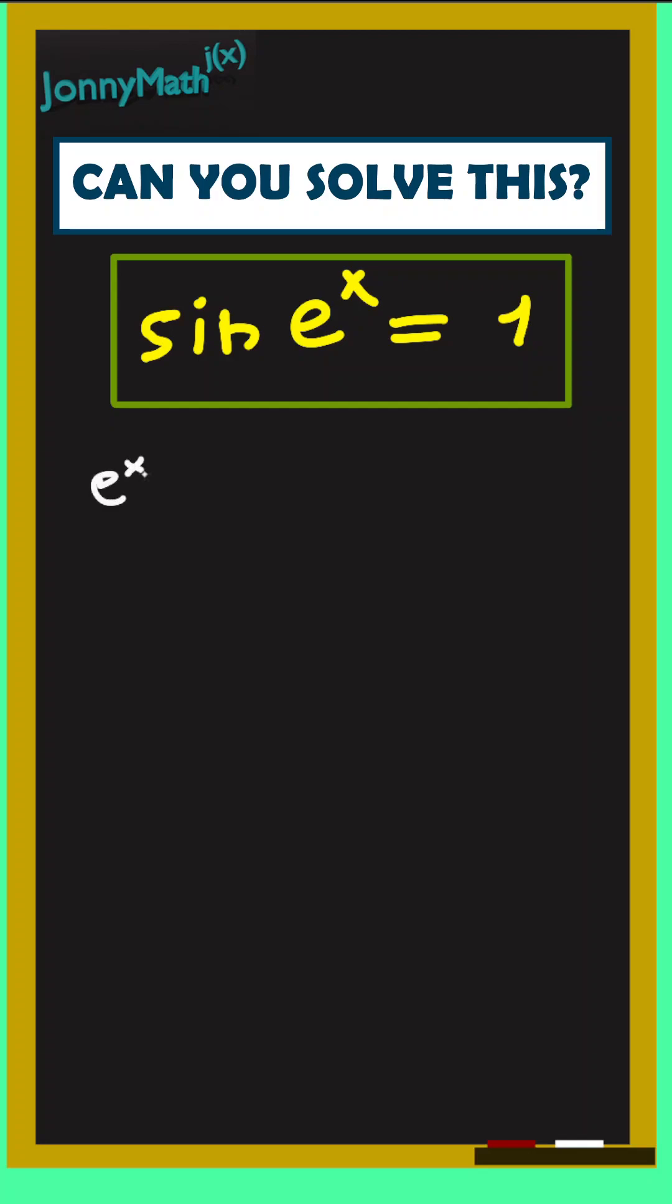So, this equation - we know that e to the x is equal to the arcsine of 1 plus 2k pi, plus 2k pi because the sine function is periodic and it has a period of 2 pi.